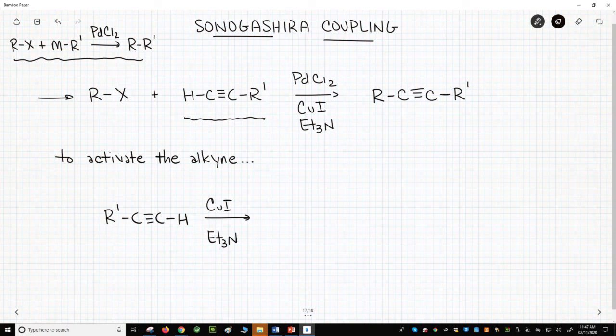The copper enhances the acidity of the alkyne, and the base removes the CH to form an acetylide.